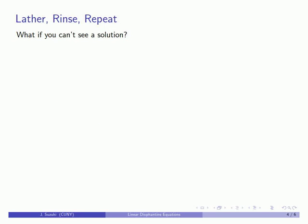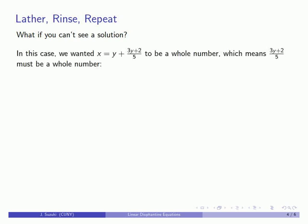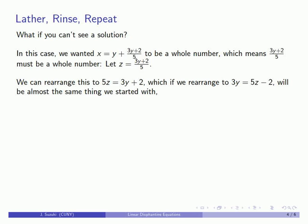That works if you can see the solution immediately, but what if you can't? We need the fractional part (3y + 2) / 5 to be a whole number. Since we don't know that number, we call it z, so z equals (3y + 2) / 5. Rearranging gives 5z equals 3y + 2, and further rearranging gives 3y equals 5z minus 2. This equation is almost the same form as what we started with, which means we can lather, rinse, repeat — do the same process again to find a solution.